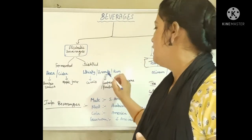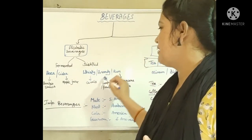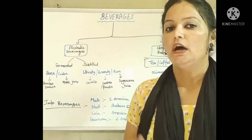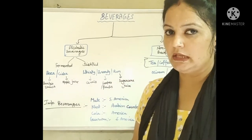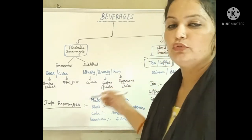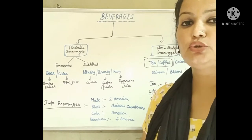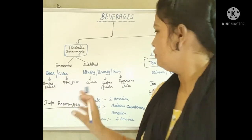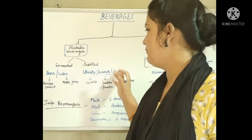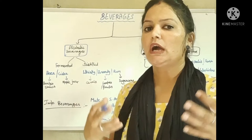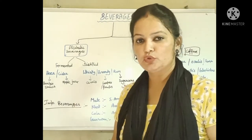Examples of distilled beverages include brandy and rum. Brandy and rum are made from grapes or other fruits, while rum is also derived from sugar cane juice. These have medicinal uses.